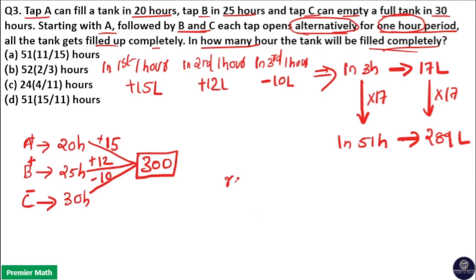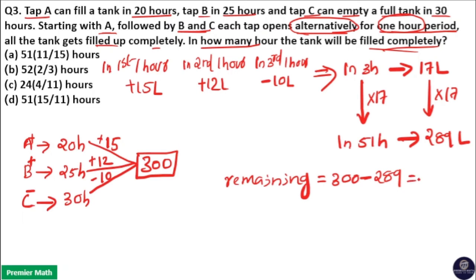The remaining amount is total 300 liters minus 289, which equals 11 liters. So the remaining is 11 liters.